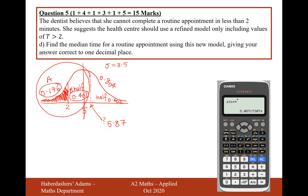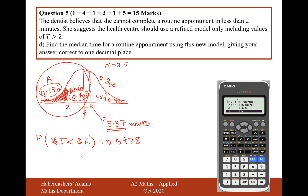5.87 minutes is the answer. To write down the workings: we wanted to find P(T < K) = 0.5978, and therefore K = 5.87 minutes. That's question 5, worth a total of 15 marks, and that's all the stats section completed. We'll now move on to the mechanics questions for the October 2020 paper.